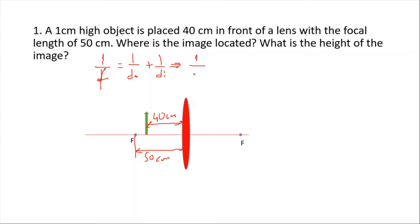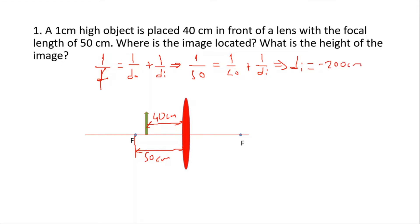Our formula is: 1/f = 1/d_object + 1/d_image. So 1/50 = 1/40 + 1/d_image. After doing some calculations, we find that the image distance is equal to negative 200 centimeters.